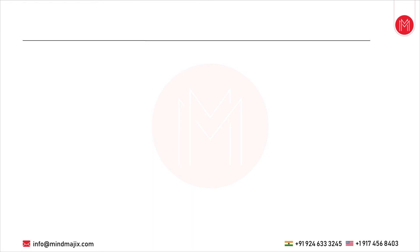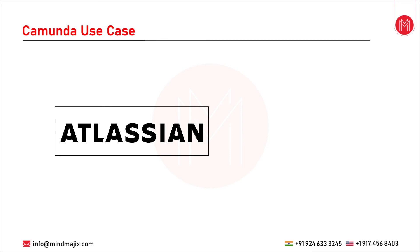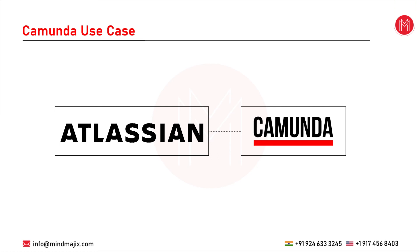Now we will discuss a use case — how an organization can adopt Camunda to solve business process management and automation problems. Open source software provider Camunda recently announced that Atlassian has selected Camunda as its business rules and business process automation technology for a range of applications spanning various domains such as finance, commerce, marketing and customer support.